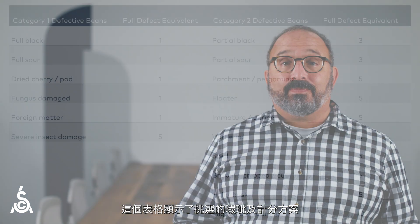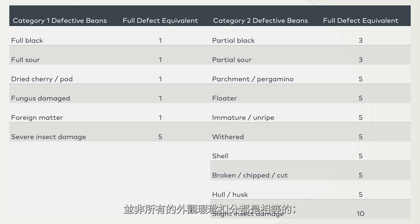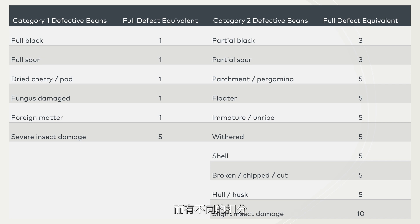Here is a table showing the counting scheme. The important thing is not to memorize the equivalents, but to recognize that all physical defects are not counted equally — they are counted differently according to their severity and importance. The calculated total number of defects is reported in the physical report.